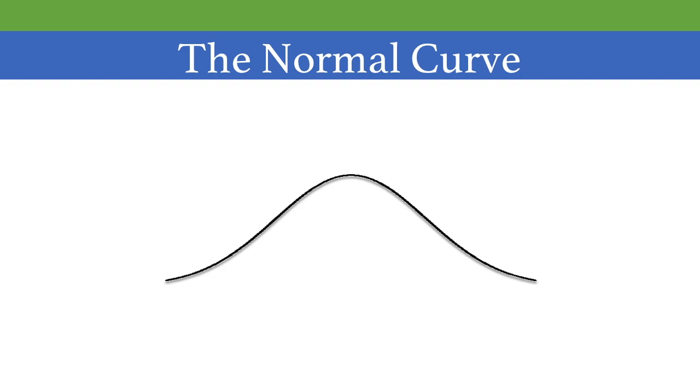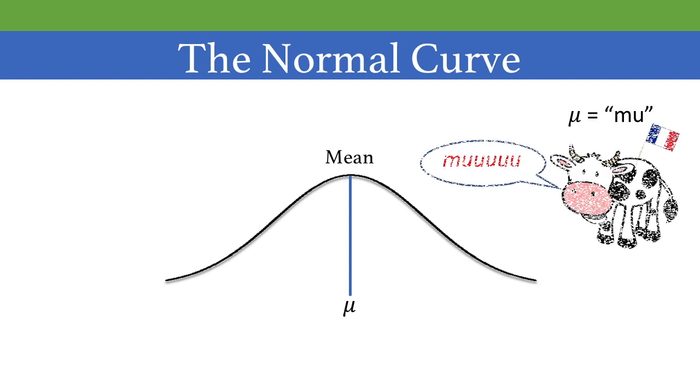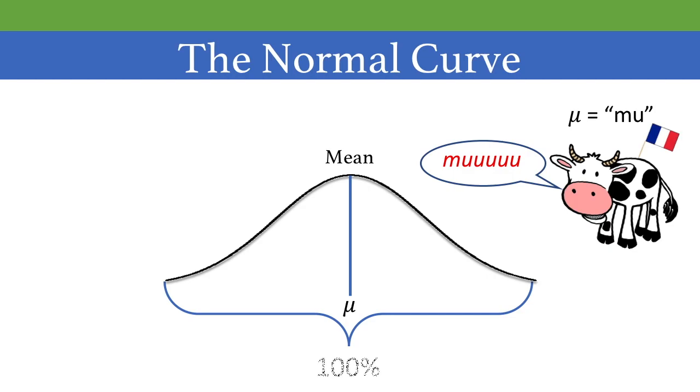So let's get to know the normal curve a bit. The mean, median, and mode are all represented right in the middle. We normally just work with the mean, which is represented by the Greek letter mu. Think of a cow with a French accent. Under the curve is 100% of our data with 50% on this side of mu and 50% on this side of mu.